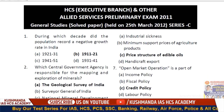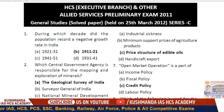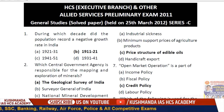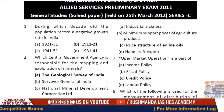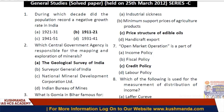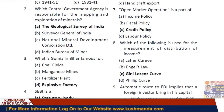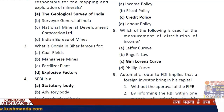Question 1: During which decade did the population record negative growth in India? Question 2: The central government agency responsible for the mapping and exploration of minerals — the answer is the Geological Survey of India. Question 3: What is Gomiya in Bihar famous for? The answer is the explosive factory.